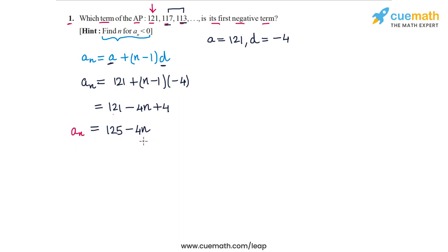Now we have to find that value of n for which this becomes negative for the first time, or we have to find the smallest value of n for which this expression becomes negative.